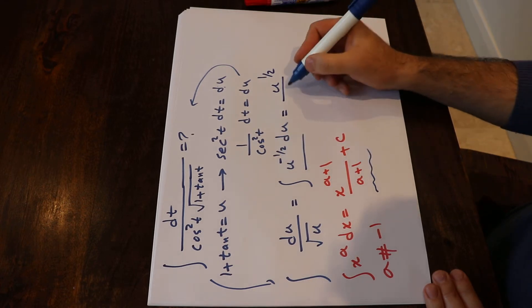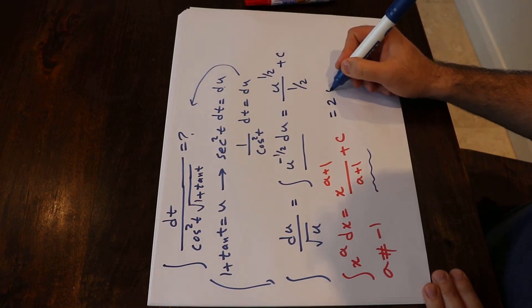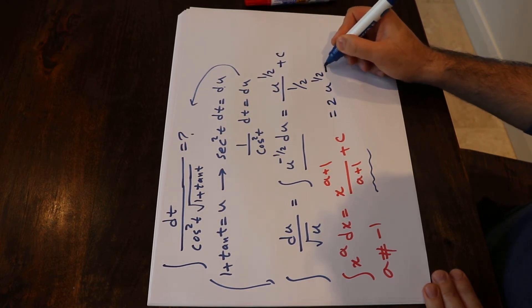This equals 2 u with the power of 1 divided by 2 plus c.